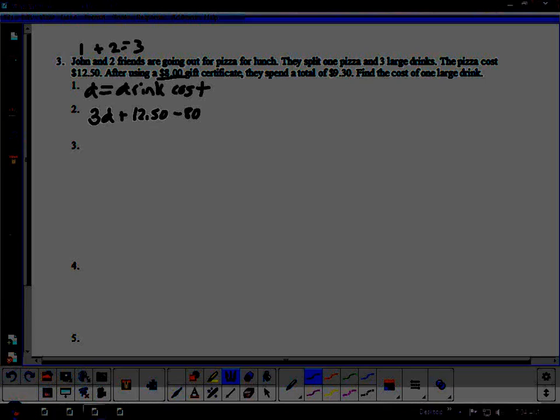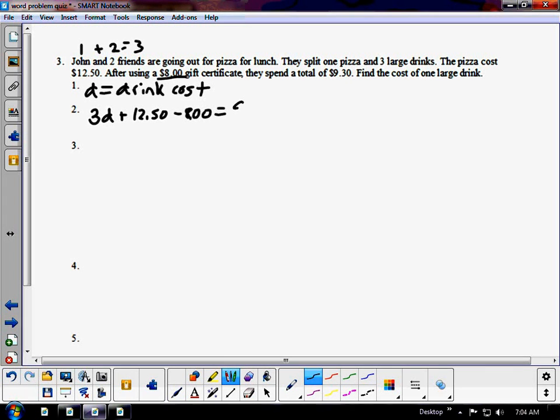So we need to know what a drink costs. Well, he has three. There's three people total. John and the two friends is three total drinks. So we're going to do 3D. We also buy a pizza for $12.50. They use an $8 gift certificate, so that's minus $8. And that total is going to be $9.30. Now, yes, we know we can do this in our head, but we have to show how to do it with an equation.